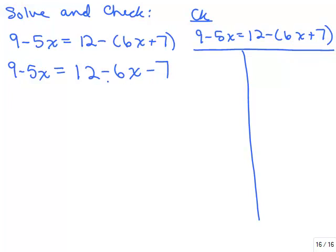The right-hand side is still not simplified because I have two constants — a 12 and a negative 7. So I simplify: 12 minus 7 is 5 minus 6x. I could also write that as negative 6x plus 5 — either way works.